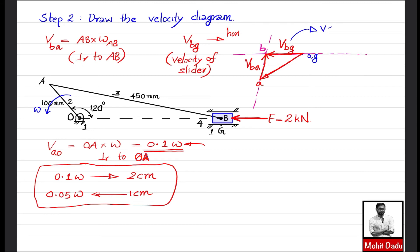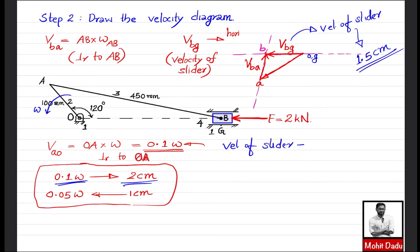Measuring the velocity diagram, the vector representing V_BG (slider velocity) is 1.5 cm long. Using the scale where 2 cm = 0.1ω, we convert: if 2 cm = 0.1ω, then 1.5 cm = 0.075ω. Therefore, the velocity of the slider = 0.075ω.